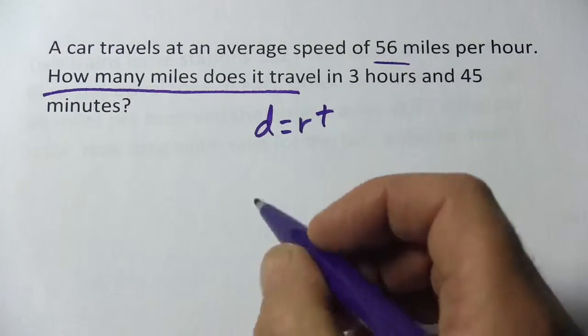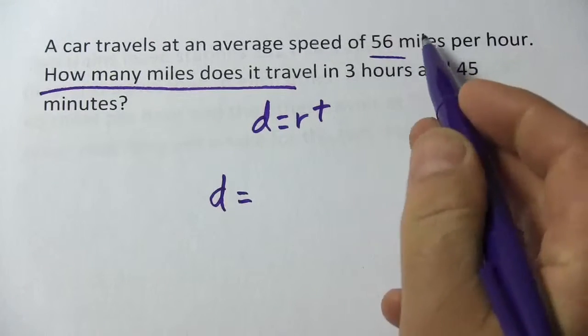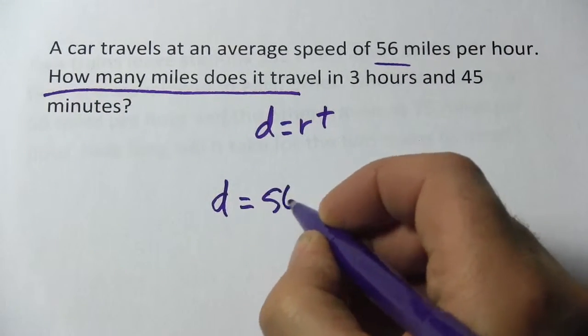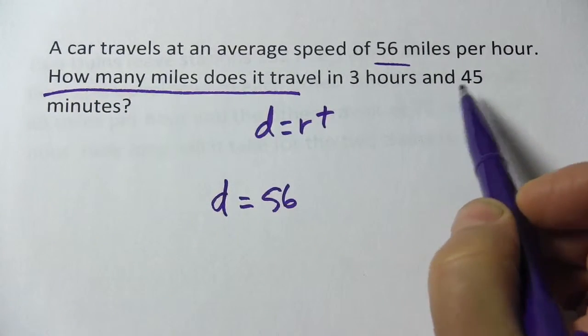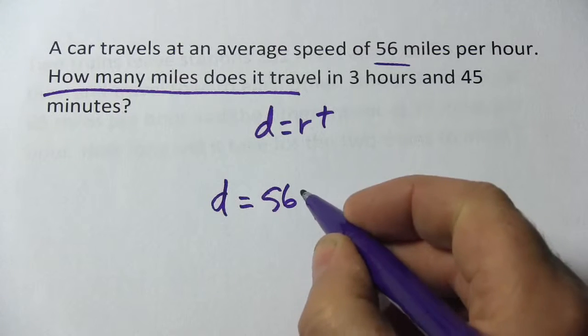So if we plug these things into our DIRT formula here, we're looking for distance, so we'll just leave that as D. Our rate is 56, and our time is 3 hours and 45 minutes. 45 minutes, that's 3 quarters of an hour, so that's 3.75.